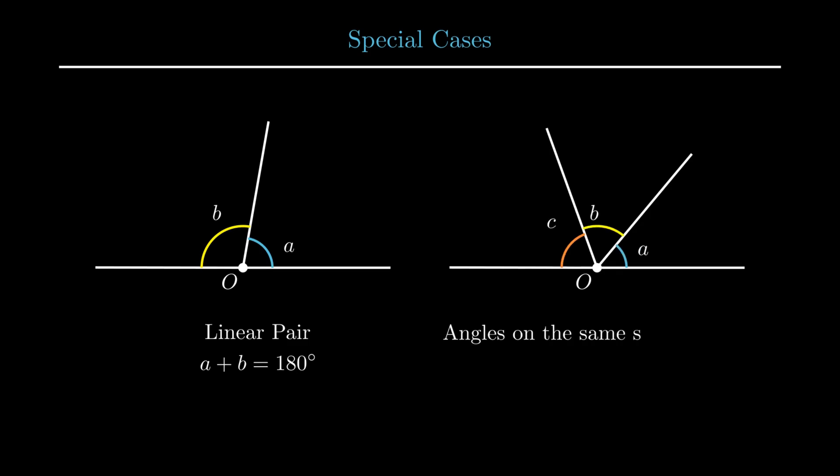There is a special case of adjacent angles which is known as linear pair. If two adjacent angles form a straight line, then it results in a special case known as linear pair. From the figure, angle A plus angle B equals 180 degrees. As pair signifies a group of two, so in case when more than two angles form a straight line, still the sum of all angles is 180 degrees. And the property is simply called sum of angles on a straight line.